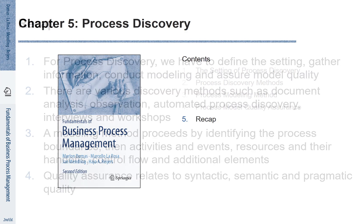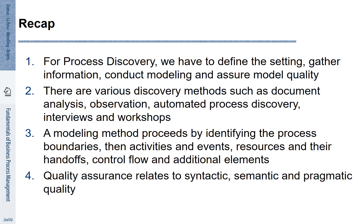Let's recap. We have seen that process discovery involves defining the setting, gathering information, conducting modeling and assuring model quality. There are various discovery methods such as document analysis, observation, automatic process discovery, interviews and workshops. A modeling method proceeds by identifying process boundaries, then activities and events, then resources and their handoffs, then the control flow and finally additional elements. Quality assurance relates to syntactic, semantic and pragmatic quality.